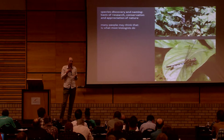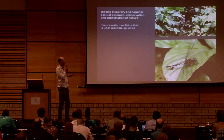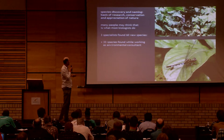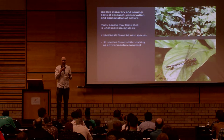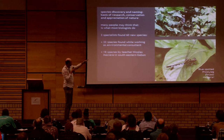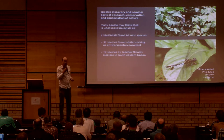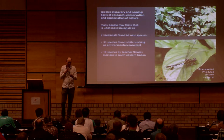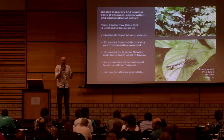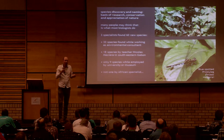Many people think biologists simply go out and discover species — the adventurous type. But in this study of 60 new species, only three specialists were involved in the discoveries. Of those 60 species, 33 were discovered while the individual was working as an environmental consultant; 18 were discovered by a French schoolteacher who goes out on weekends catching dragonflies as a hobby; and only nine were found by someone — me — while employed by a university or museum, which is where we assume this work happens. Unfortunately, none were discovered by African specialists, simply because we haven't trained them yet — they don't exist.